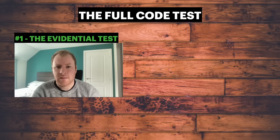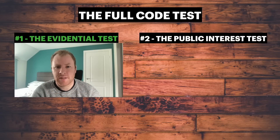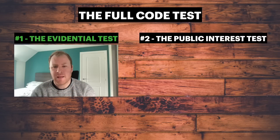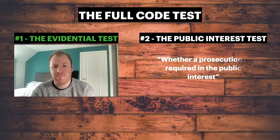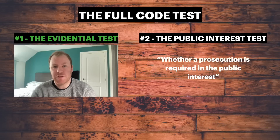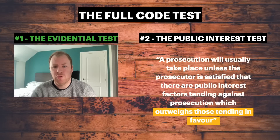The second test that's applied is what's known as the Public Interest Test. That's really considering whether or not a prosecution is in the public interest, and there can be a number of reasons why this wouldn't be the case — maybe the age of the defendant, maybe the out-of-court disposals that are available are a more appropriate way to deal with the situation. But the default position is that a prosecution will normally take place unless there are overriding public interest factors which tend to outweigh those in favour of a prosecution.